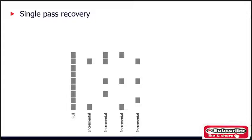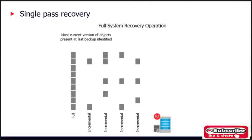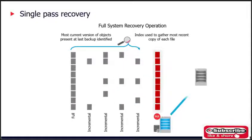Here we have taken four incremental backups. Let's assume that at this point the server experiences a catastrophic failure and needs to be recovered. Commvault's media agent indexes all data being returned to the storage target so that an administrator can view all backup data from any point in time. When recovery is initiated, Commvault looks at the most current version of objects present at the last backup, leverages the media agent index to gather the most recent copy of each file, and uses those files to conduct the system restore — combining the latest full backup with incremental backups to present a point-in-time image for recovery.